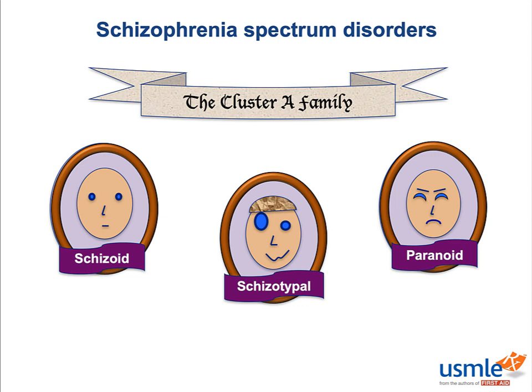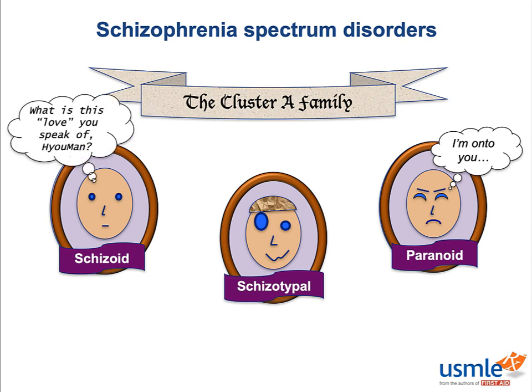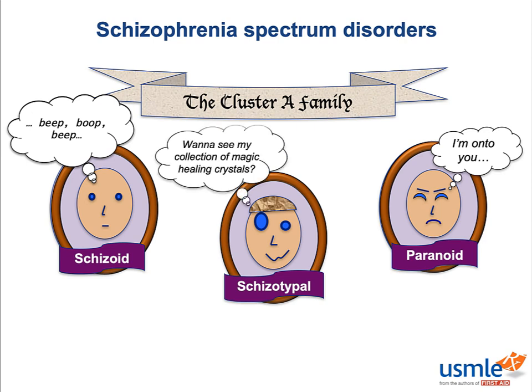Paranoid PD embraces the paranoid ideation of the psychotic disorders, being mistrustful to a fault and assuming the worst intentions of everyone. Schizoid PD captures the negative symptoms rather than the psychotic symptoms, with decreased emotional depth, apathy, and a marked lack of desire for human relationships. Schizotypal PD embodies disorganization through odd, slightly bizarre thought processes and evidence of mild behavioral disorganization like poor hygiene, wearing unusual garments like paper bags as hats, and a complete inability to relate to other people.